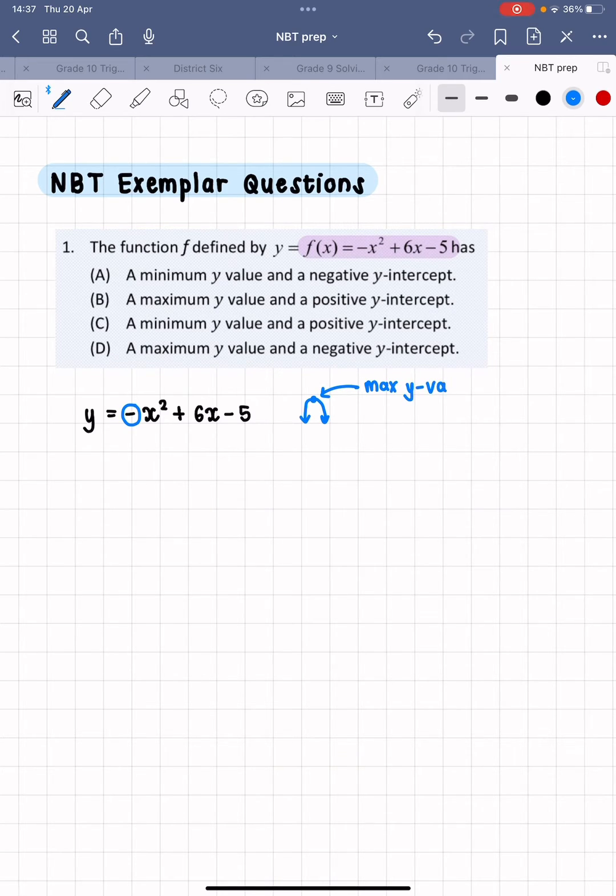So that means that we know that we are either going to be working with option b or option d. Those are the two options that we actually have to choose from. So now let's see, what else are they saying?